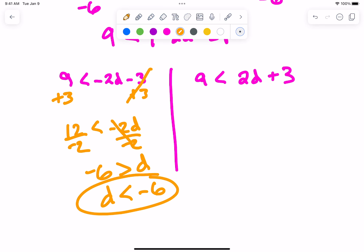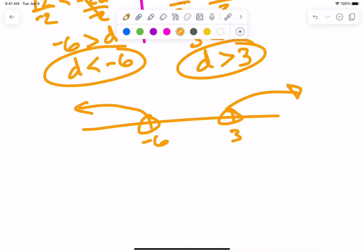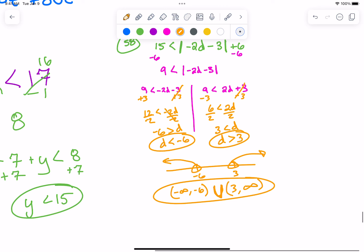Negative 6, positive 3, open circles on each. Going together or going opposite? Away from each other. So interval notation, we're going to have a union because we're going to have two separate pieces. What's the very left-most point? Negative infinity to negative 6, parens on both. 3 to infinity, parens on both. There you go, that's interval notation.